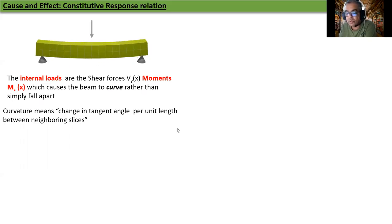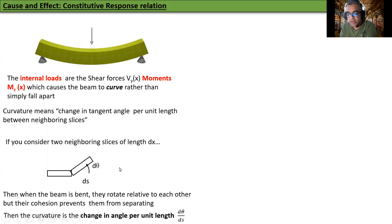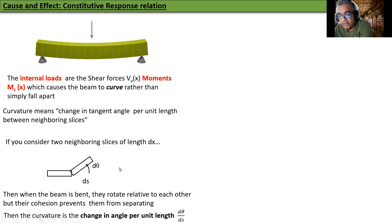If you consider two neighboring slices of length DX, when the beam is bent, they rotate relative to each other, but their cohesion prevents them from separating. This is where the coordination occurs. Then the curvature is the change in angle per unit length.